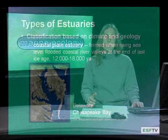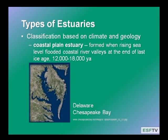The first group of classifications is based on the interaction of climate and geology. The first type is a coastal plain estuary. Coastal plain estuaries are formed after the last glaciation cycle when the sea level rose as the glaciers melted and they flooded river valleys. The Chesapeake Bay is actually a giant estuary and it's a good example of a coastal plain estuary.